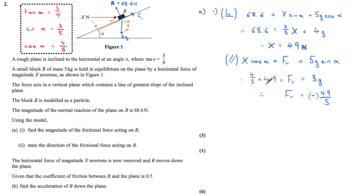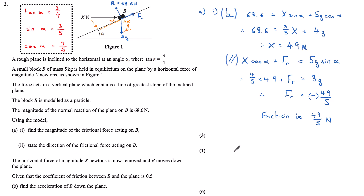Multiplying 4 fifths by 49 and subtracting from 3g, I get a value of negative 49 fifths for friction. The negative comes from the fact that I labelled the direction wrong. The negative tells me friction is actually working down the plane, not up the plane. Ignoring the negative sign, the magnitude of friction is 49 over 5 newtons. For part ii — state the direction of the frictional force — since the answer was negative when I assumed friction acted up the slope, friction is actually acting down the slope.